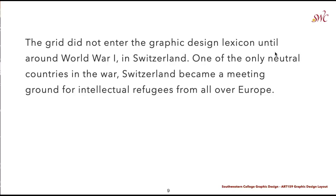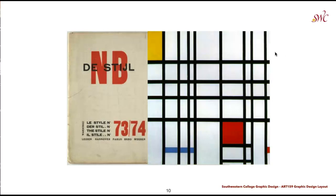The grid did not enter the graphic design lexicon until around World War One in Switzerland. Because Switzerland was one of the only neutral countries in the war, it became a meeting ground for intellectual refugees from all over Europe. These conditions meant a lot of sharp people were printing multilingual documents, often with columns in French, Italian, German, and English — a design problem that typographers like Herbert Bayer and Jan Tschichold stepped up to address.